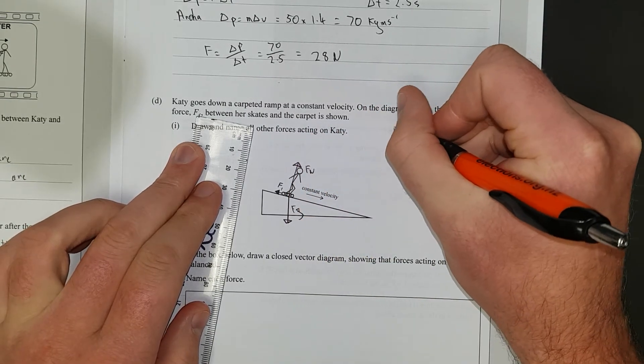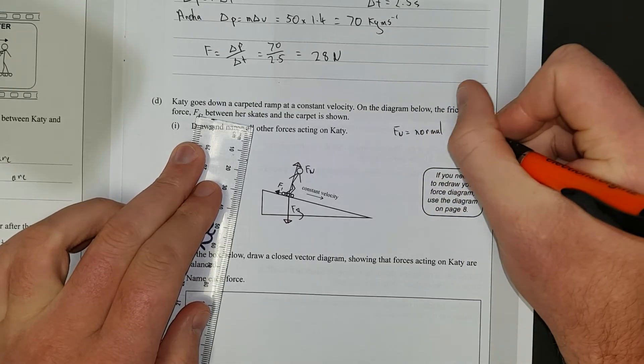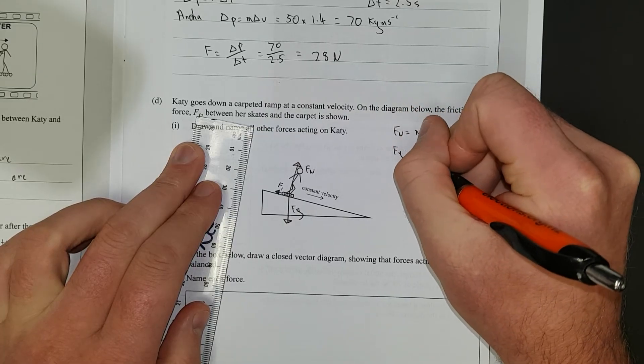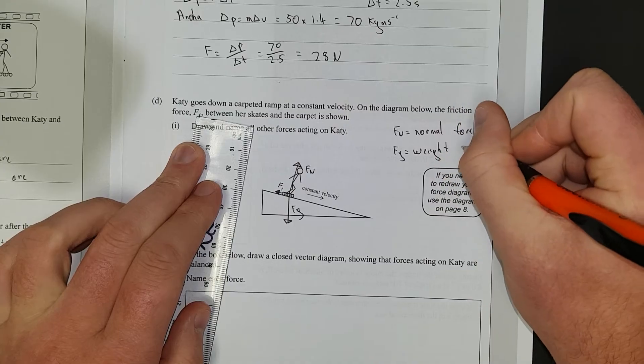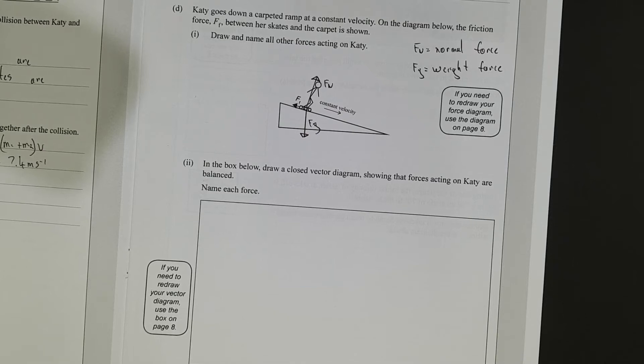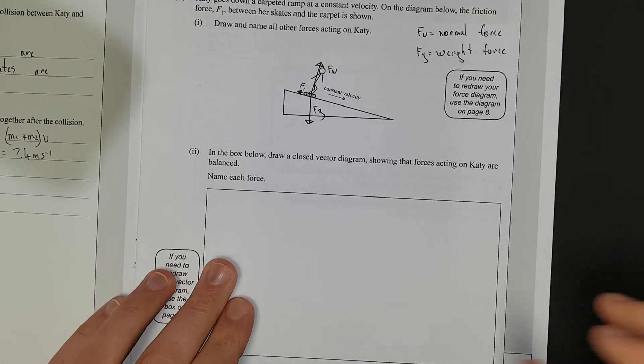So, put a key up here. FN equals normal force, or support force, or whatever you want to call it. And, this is FG, which is, you know, the weight force, or gravitational force. There's a few synonyms for it. Right. In the box below, draw a closed vector diagram showing the forces acting on, that the forces acting on KDE are balanced.